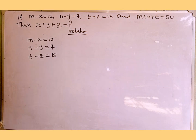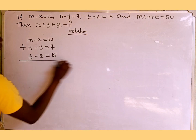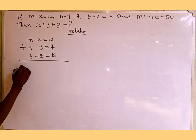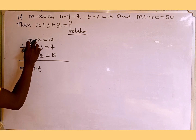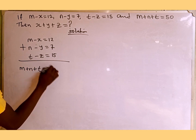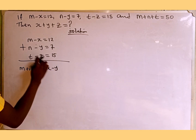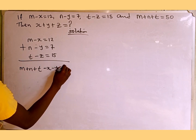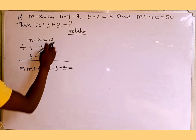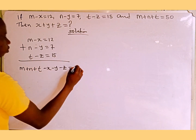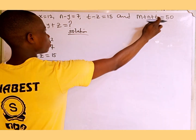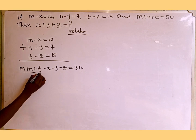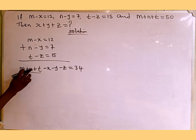The first thing we're going to do is add all these equations together. Adding them gives us m plus n plus t on the left side, then minus x minus y minus z, which equals 12 plus 7 plus 15, giving us 34. And recall from the question, m plus n plus t equals 50.